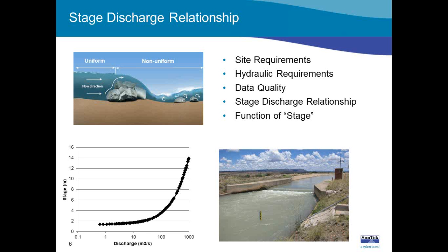The stage-discharge relationship, as the term indicates, is developed from actual stage versus discharge measurements. That process is developed over time, and although we are looking for a site with a stable relationship, it is a fairly relative term because it does change over time. For a simple stage-versus-discharge relationship, the relationship is normally a function of stage — but what if conditions are such that stage is not the only variable impacting the relationship?